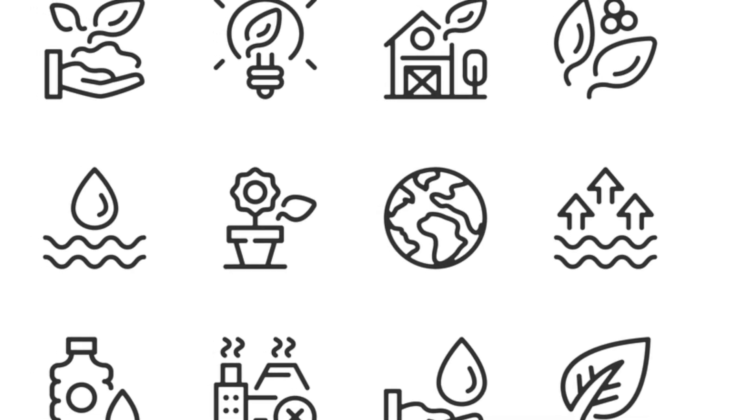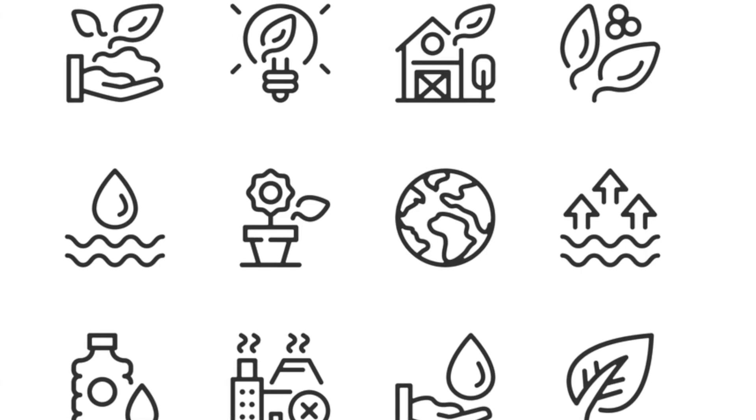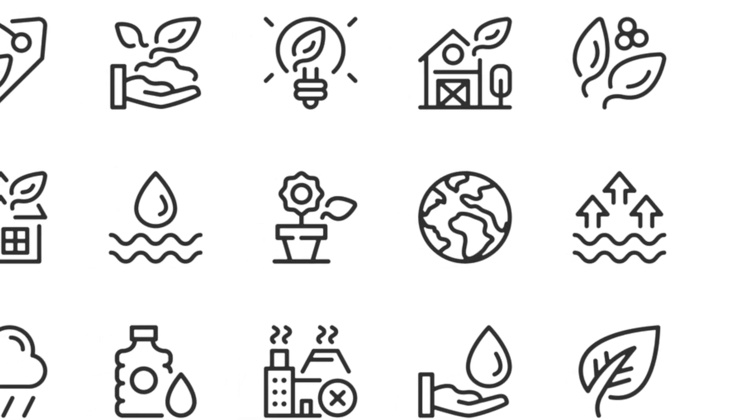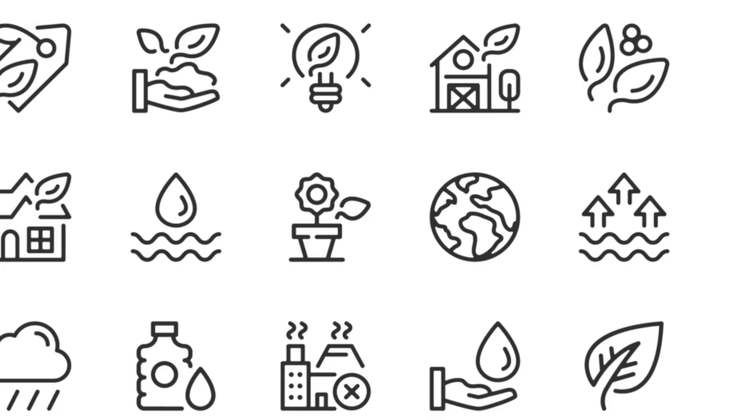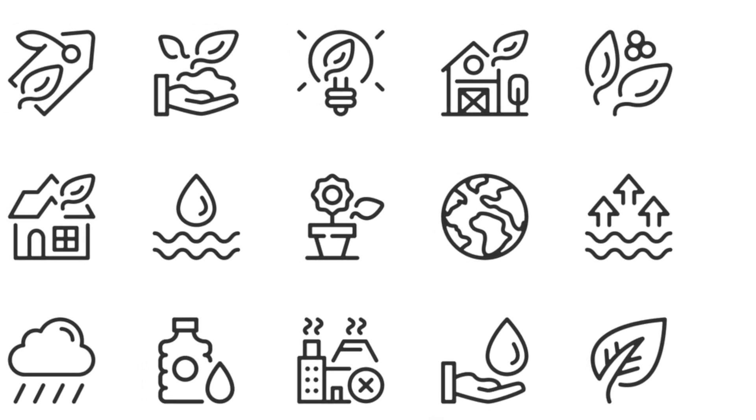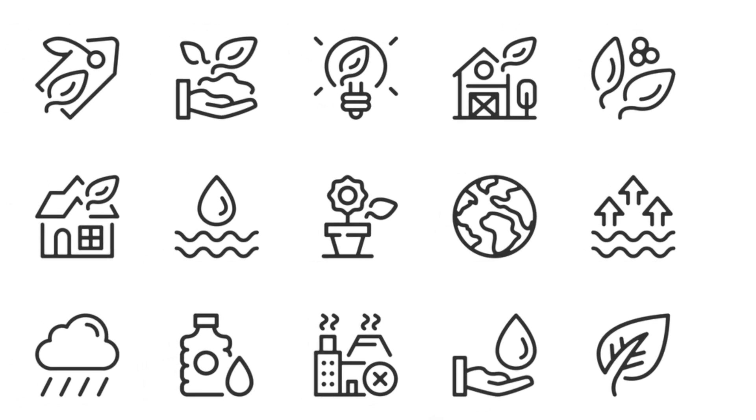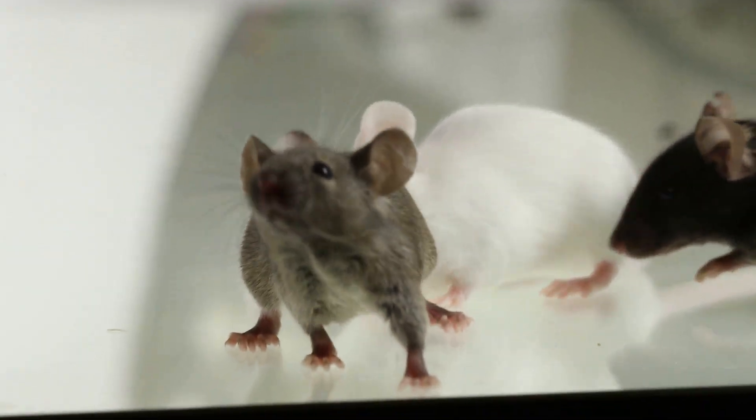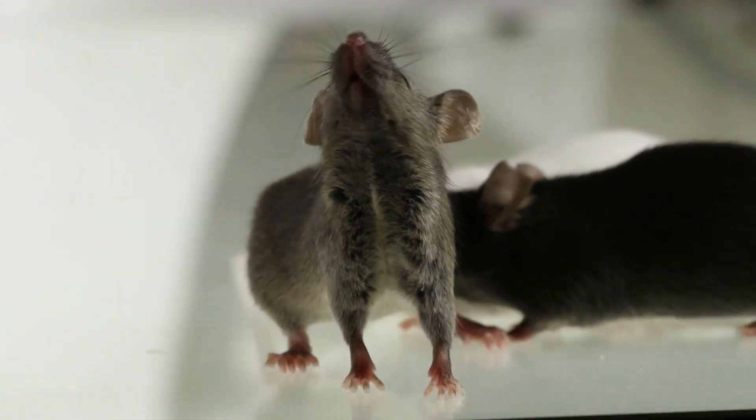It's not just the genes you have, but how your body decides to use them. So these switches exist, but what flips them? This is where the story gets personal, because one of the biggest influencers of our epigenome is our environment. The choices we make, the food we eat, the air we breathe, it all sends signals that can flip these switches. One of the most striking demonstrations of this is the agouti mouse experiment.